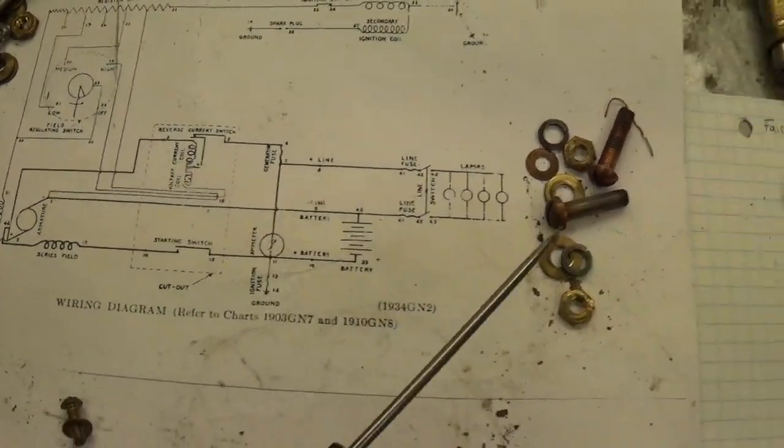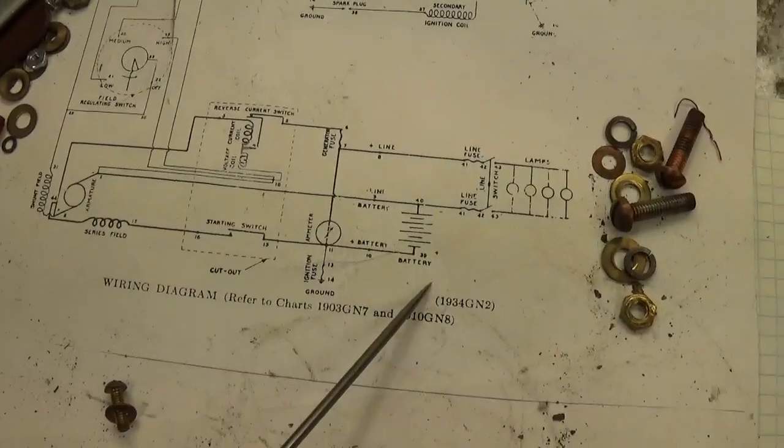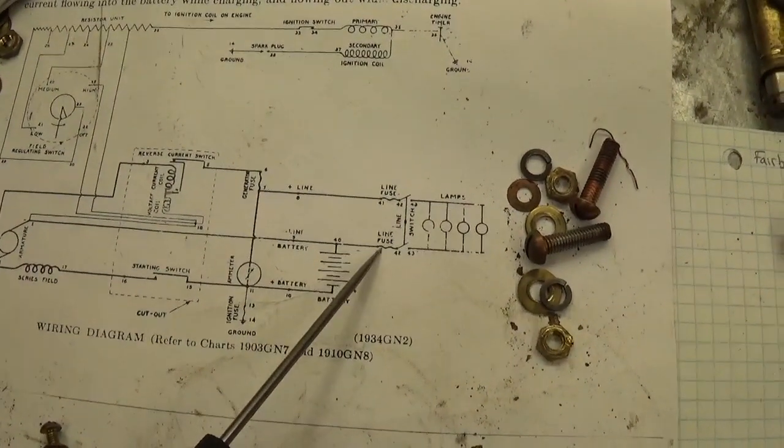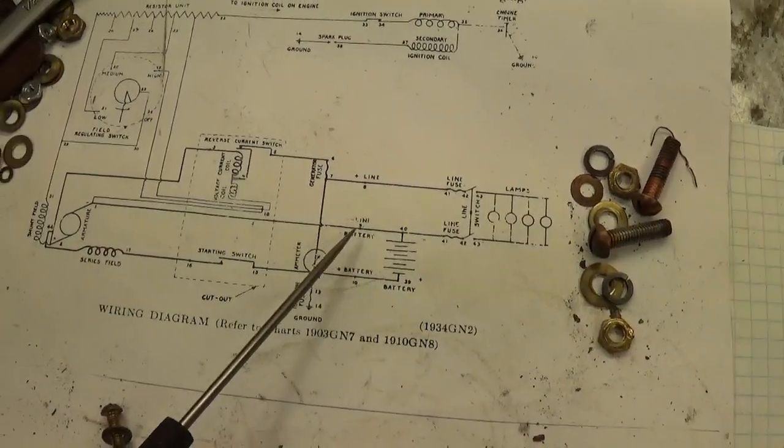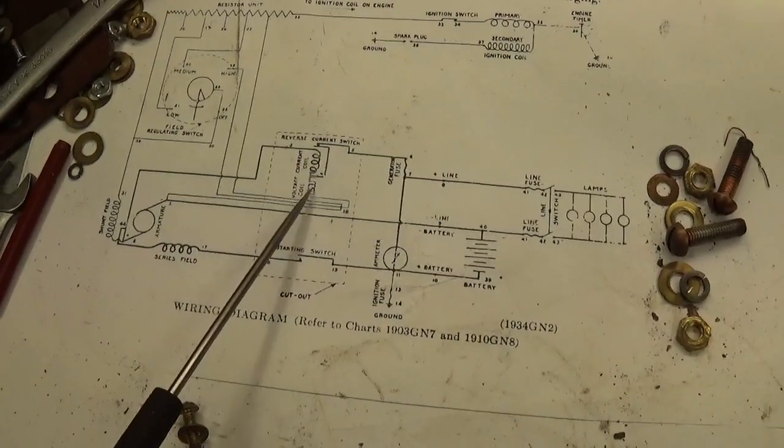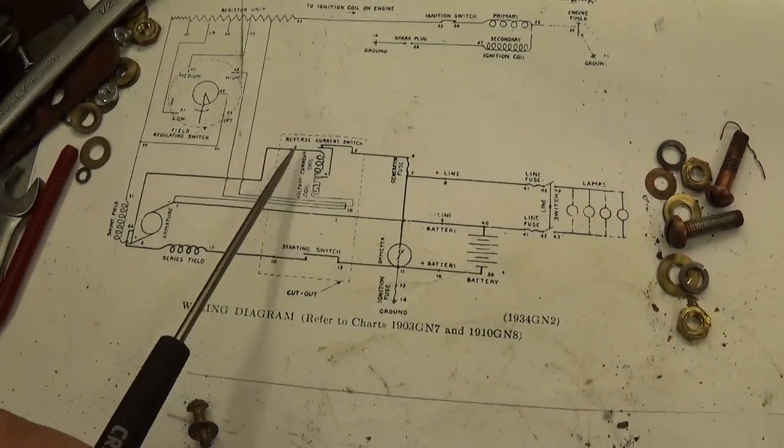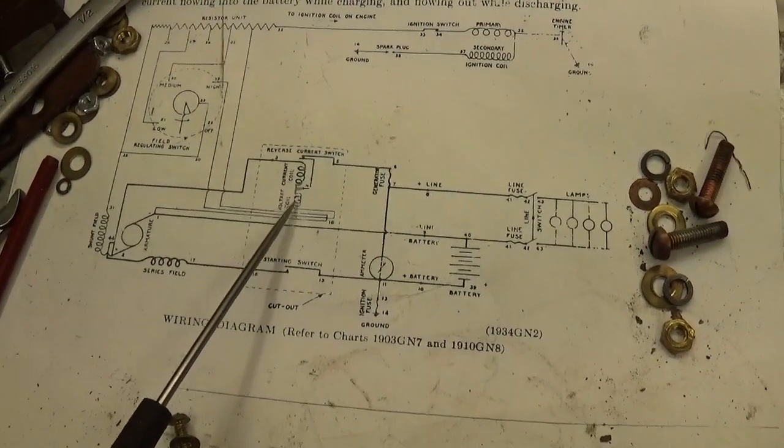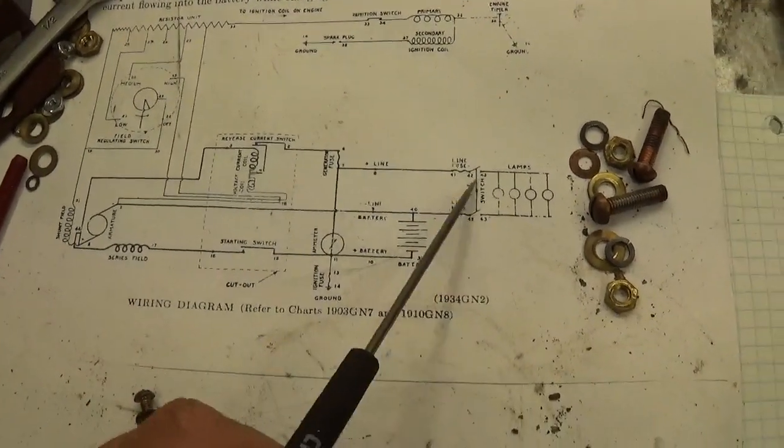So without going into too much more detail, that's pretty much how it works. So being he's not charging any batteries at the time, he's just running off of the lines here, positive and negative, to run some lights. Even though the generator itself is making power, it's not closing this contact, it's not energizing this coil. Well it is, but the coil is not closing this contact, which isn't giving him any juice.